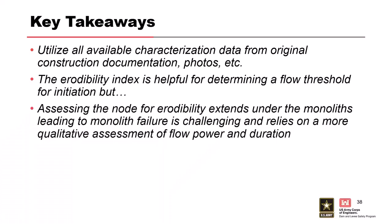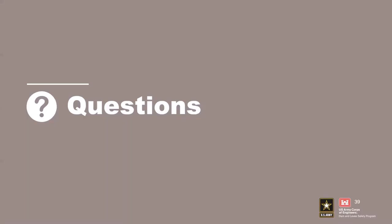The erodibility index is really helpful for determining a flow threshold for initiation. But we are still left with the question in risk assessments on time dependence — how are we going to actually erode under the monolith? The erodibility index doesn't really help you that much with that. Just because you initiate erosion, do you have the duration and continued stream power to undermine that monolith and erode 10 feet of rock? That becomes a more qualitative assessment. But you can still use a lot of your background information from your site characterization to help inform that — is this lower quality ashy tuff continuous? Do you have these release planes? I want to capitalize on all of the available original construction documentation, photos, et cetera, that you have. That's all I have for this presentation unless you guys have any questions.